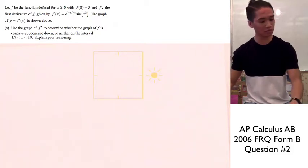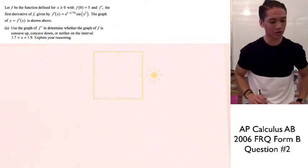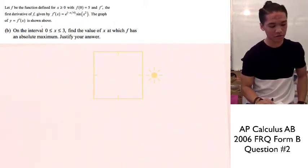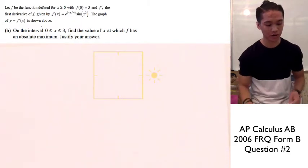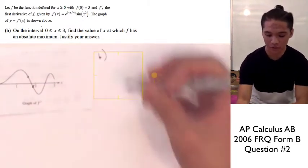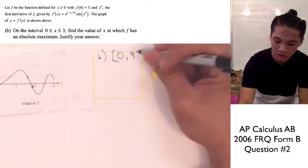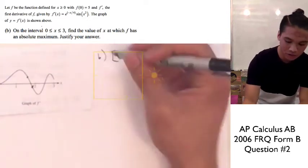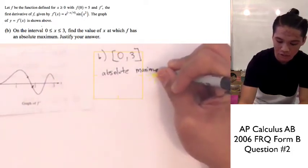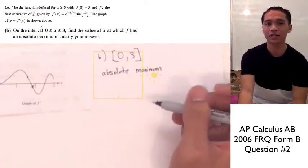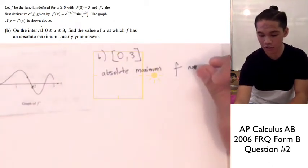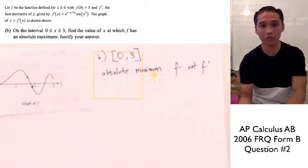Moving on to part b: on the interval where x is between 0 and 3 inclusively, find the value of x at which f has an absolute maximum and justify your answer. For part b, we're looking at the interval from 0 to 3, and we have to look for the absolute maximum on this interval. Absolute maximum is different from a relative maximum, and for this we're going to have to use the function f, not f prime, when we're looking for the values of y.